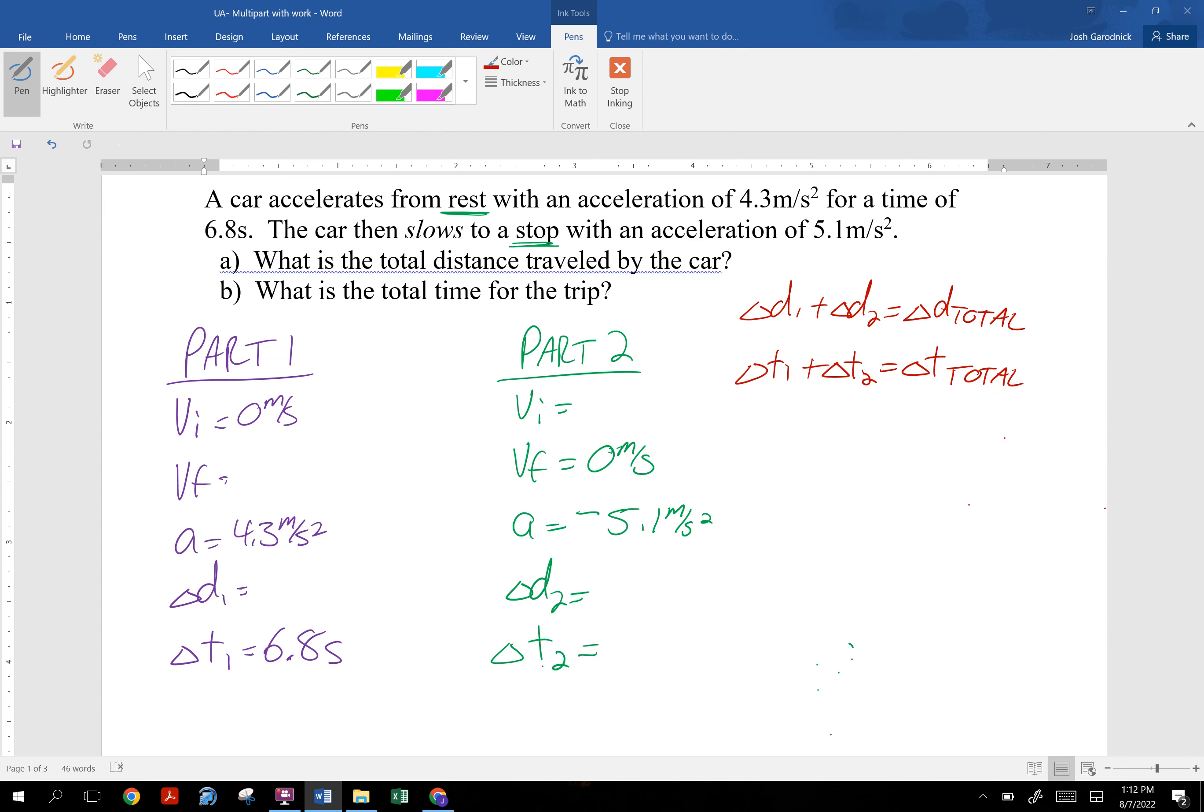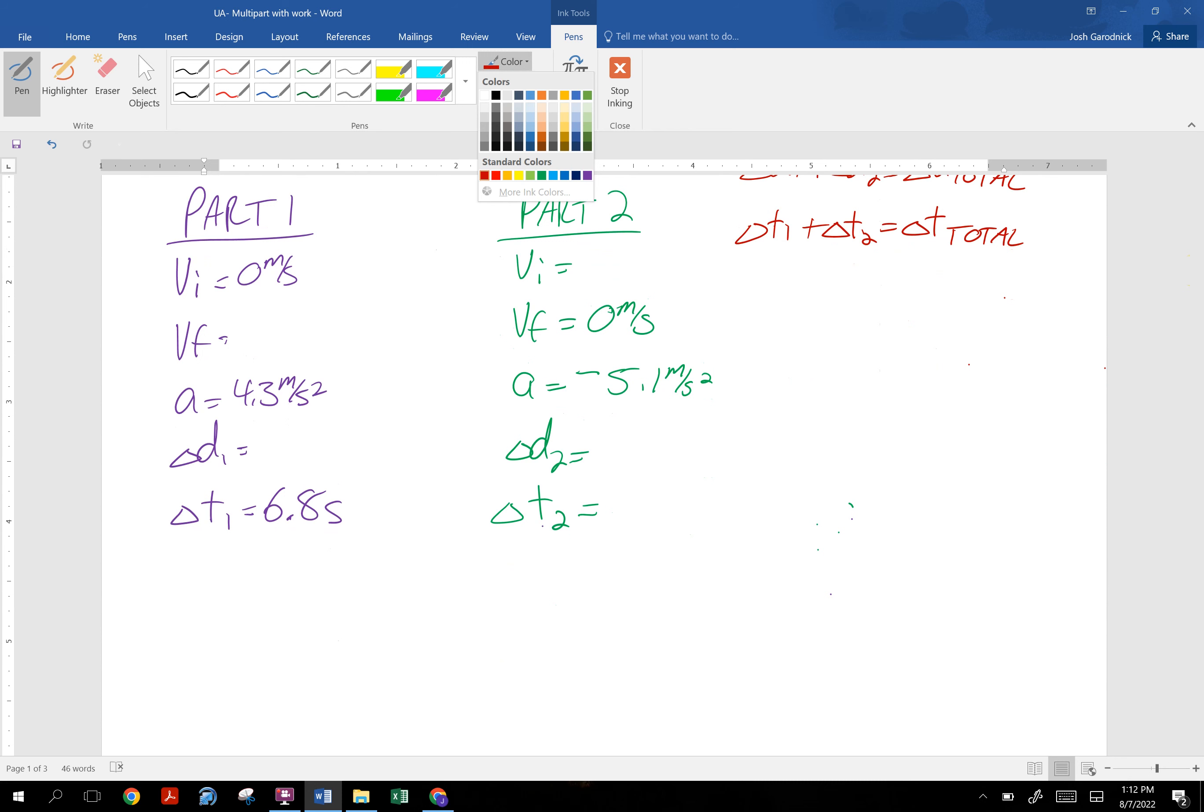Before we do that, by now you should know that the most important connection between two parts of a problem is that the final velocity from part one is equal to the initial velocity of part two. So if you go zero to 60, the end of the story for part one is 60. Then you hit the brakes. The moment you hit the brakes, you're going 60.